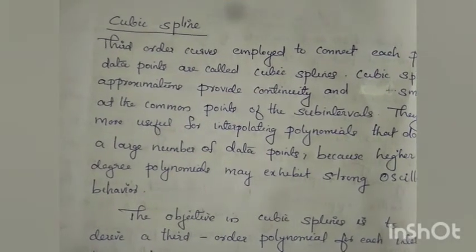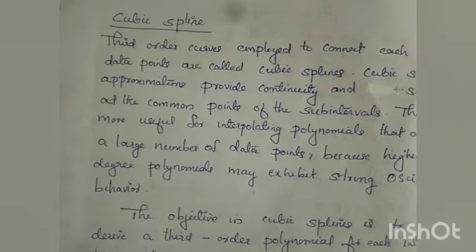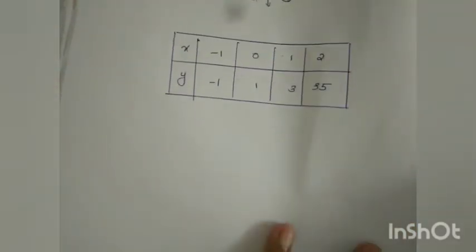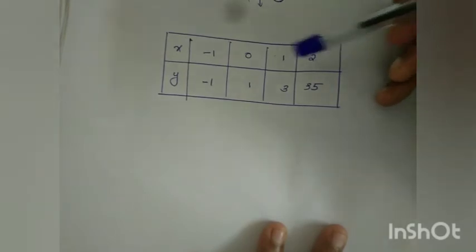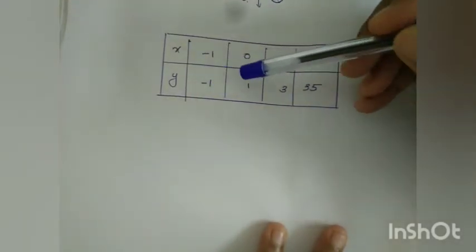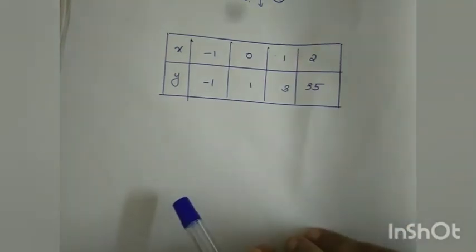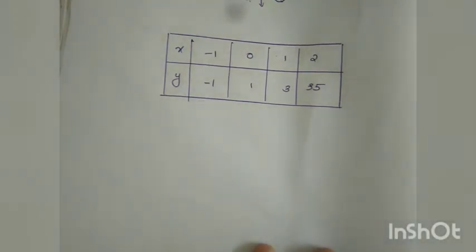Here is an example. Suppose we have data points: x values are minus 1, 0, 1, and 2, and the corresponding y values are minus 1, 1, 3, and 5. We will construct a cubic spline function through these points.